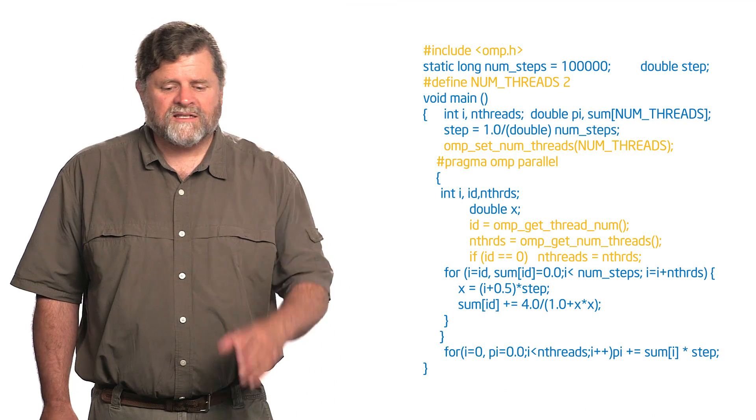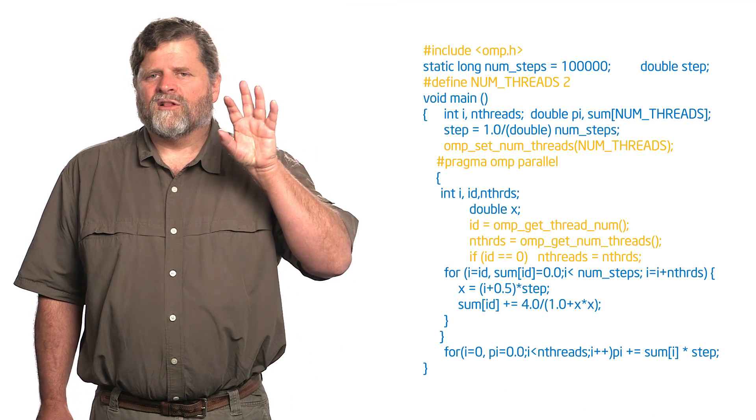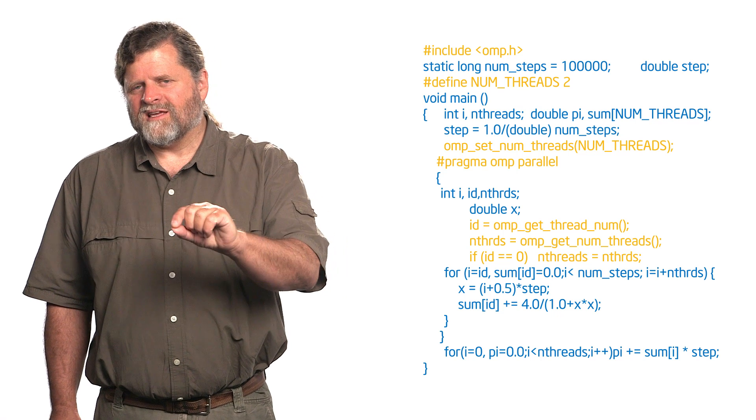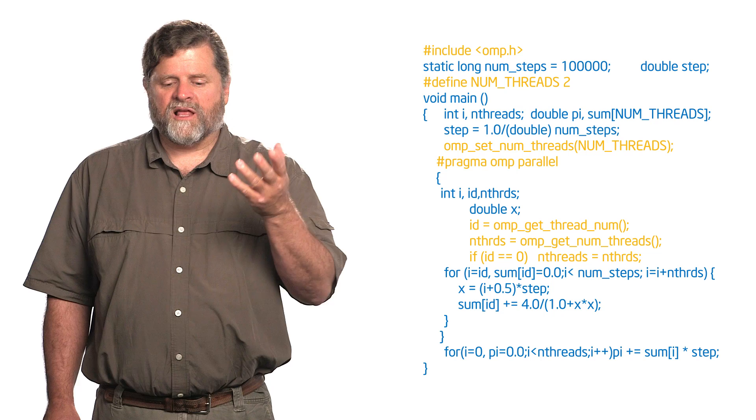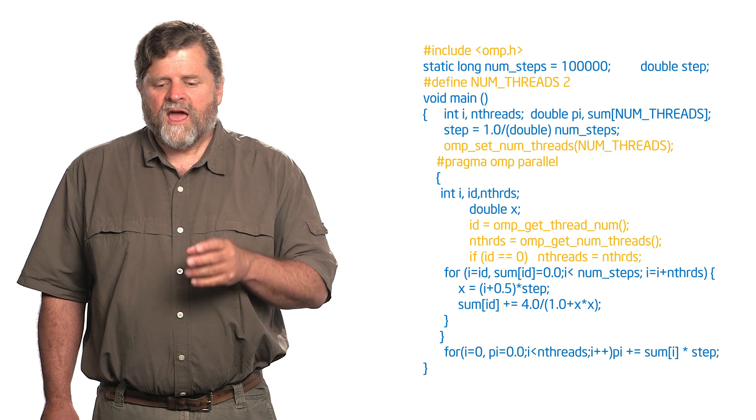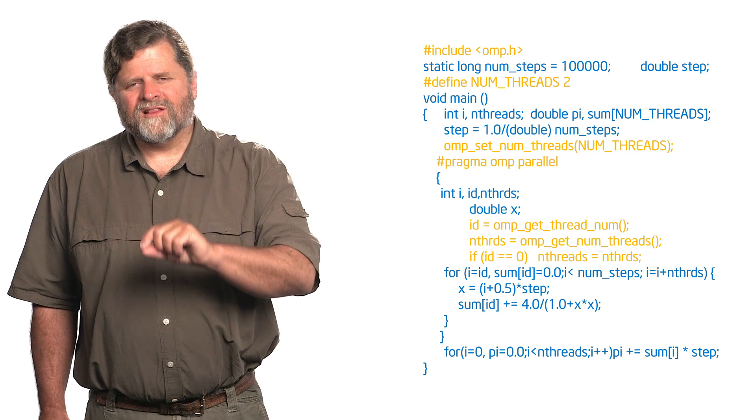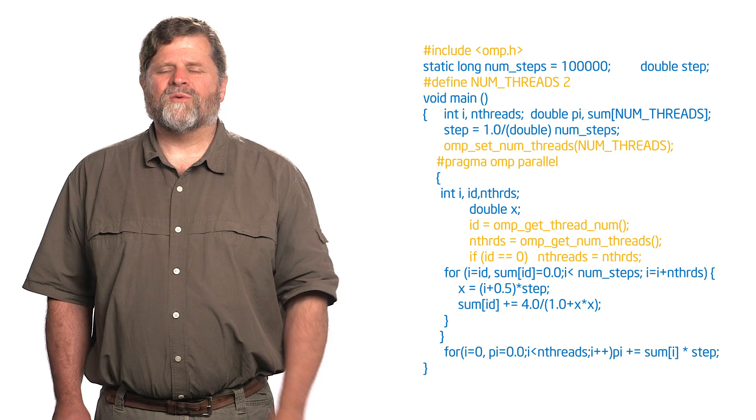I did the easy cheat way. It's called a cyclic distribution of the loop iterations. What I did is I started at the loop index equal to the ID. I left the limit of the loop the same, that the loop index was less than the number of steps. And then I incremented the loop index variable by the number of threads, I equals I plus the number of threads.